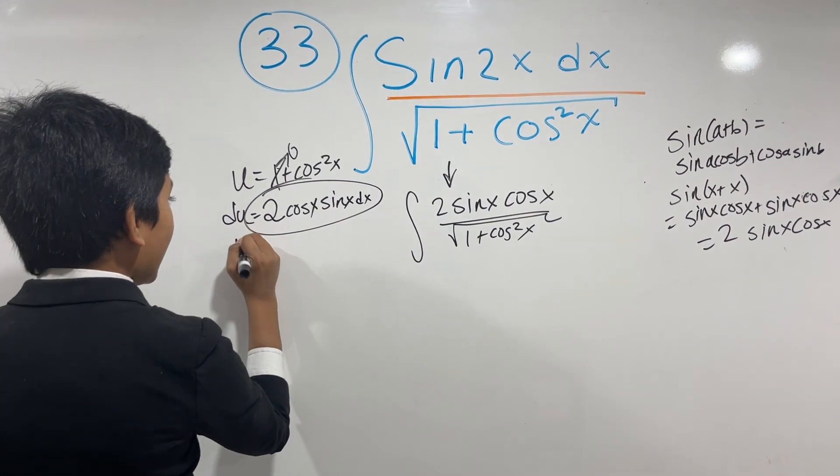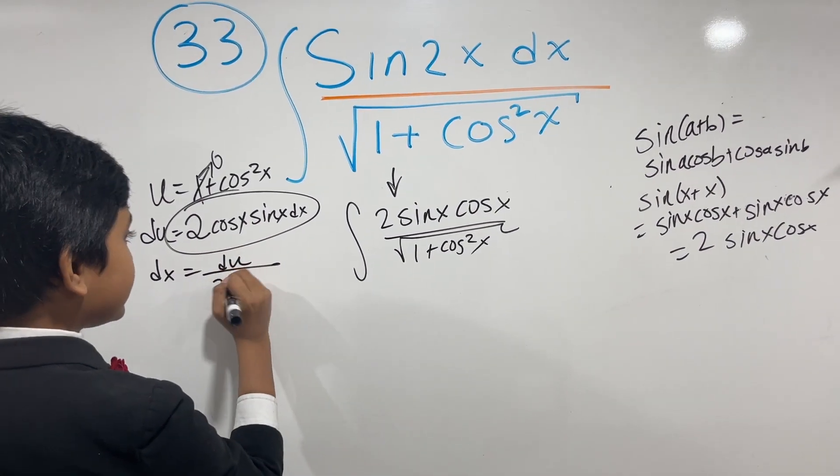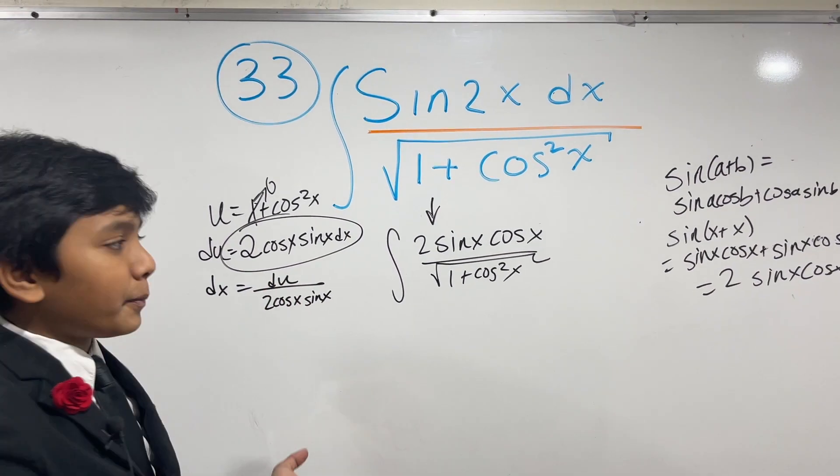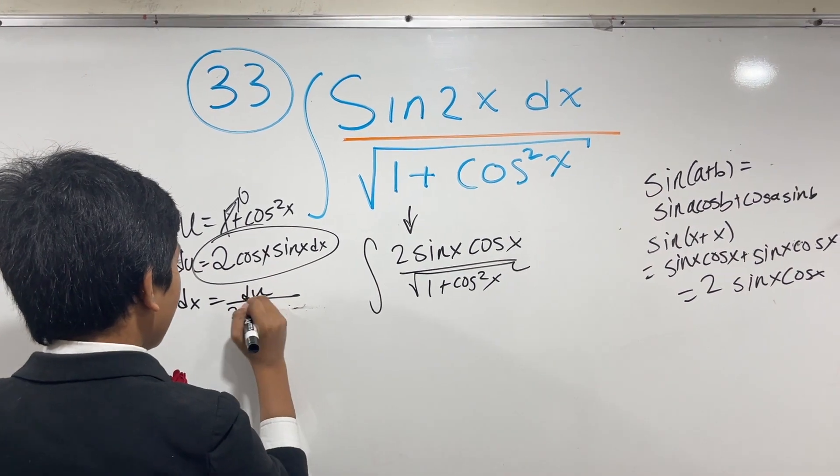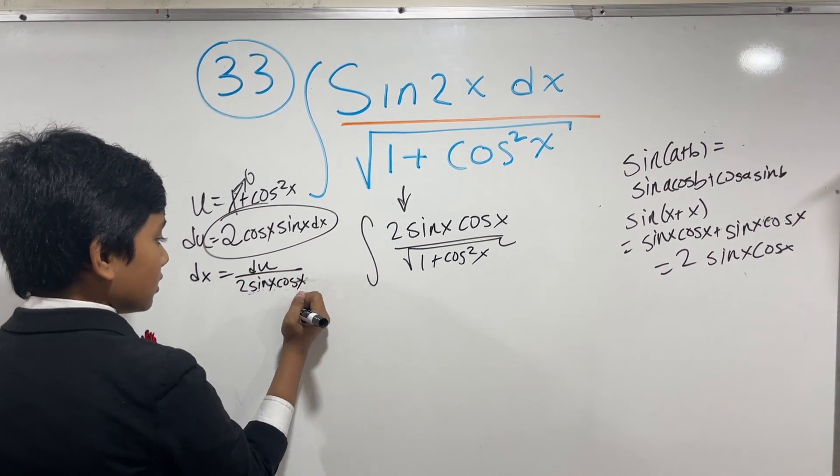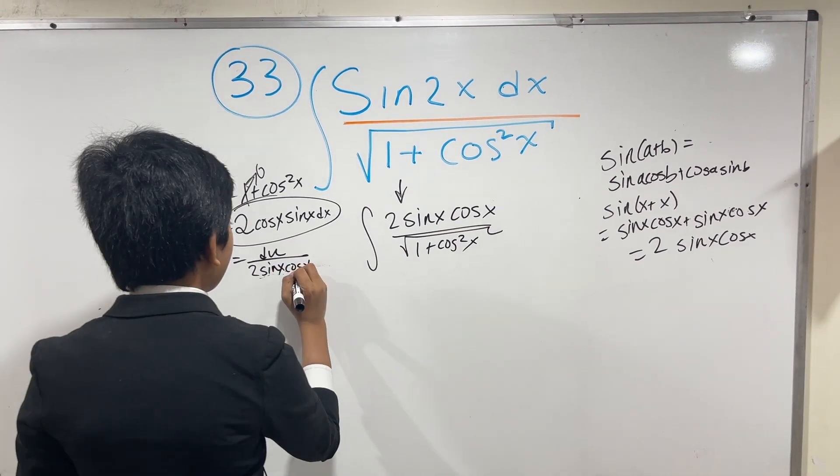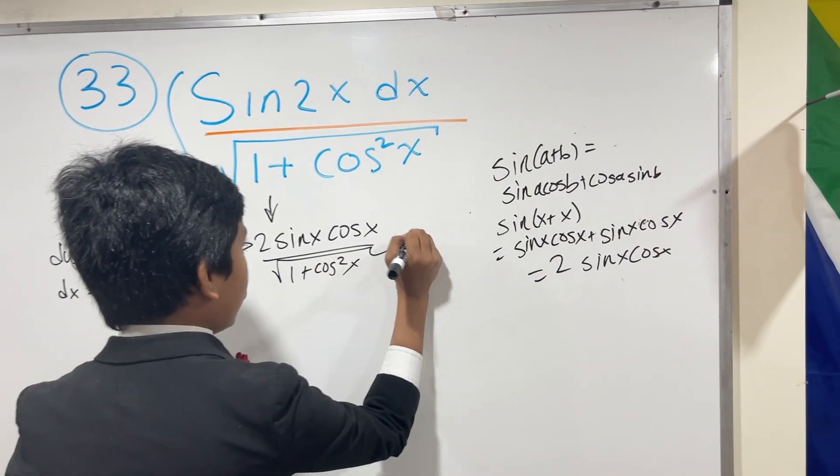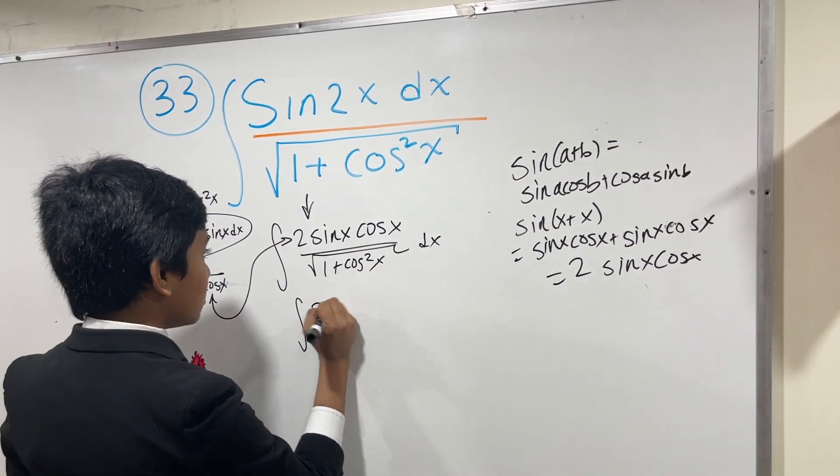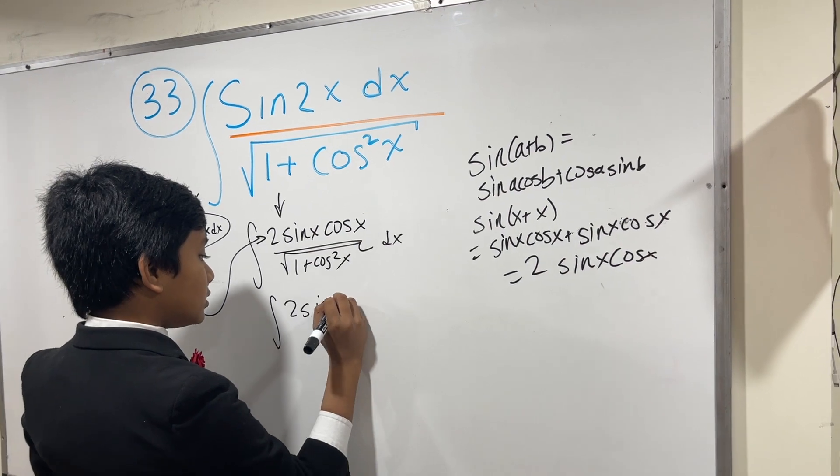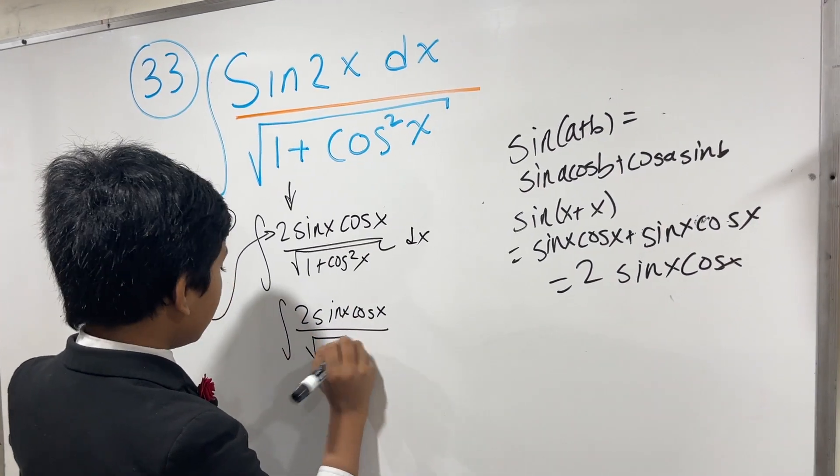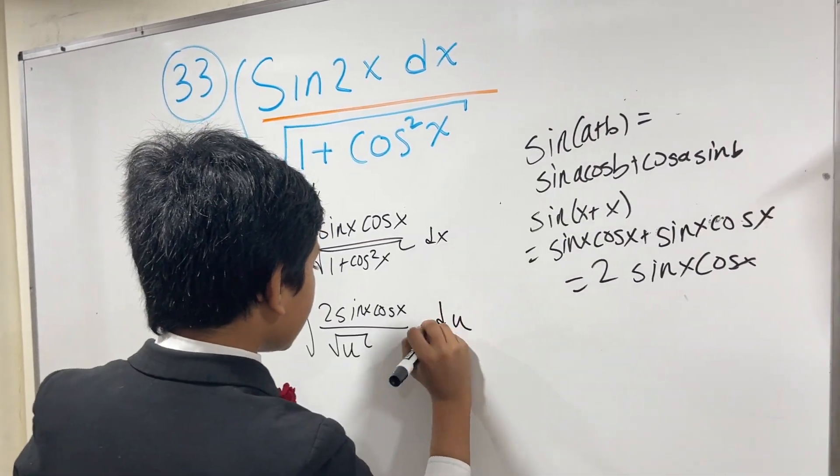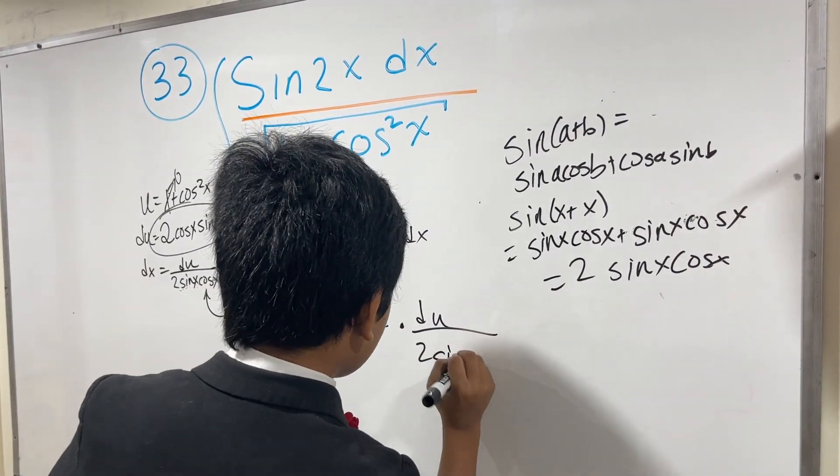So that means that dx is du over all this. And using the power of the commutative property, we can rewrite this as 2 sine x cos x. Do you see the alignment now? I'm sure you do. So now we see that this is 2 sine x cos x over the square root of u times du over 2 sine x cos x. That's so cool.